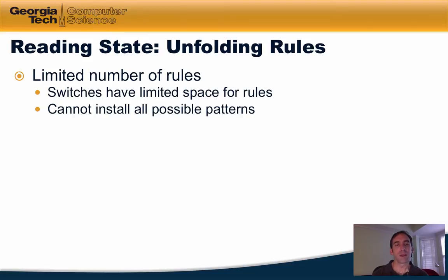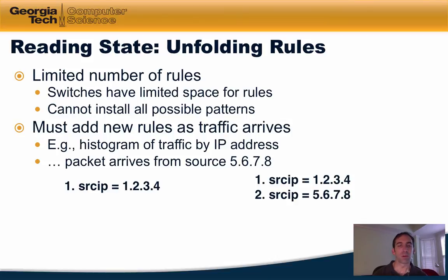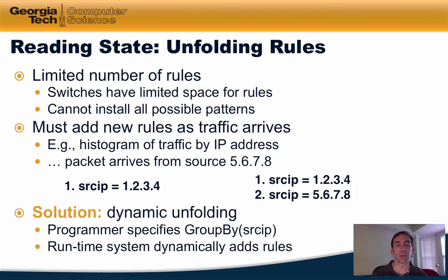Another challenge in reading network state is that there are a limited number of rules that can be installed in the switch. Switches have limited space for rules and we cannot install all possible patterns. For example, suppose we would like to monitor traffic in a way that allows us to produce a histogram of traffic volumes according to IP address. It clearly does not make sense to create a rule for every IP address. The solution is a primitive called dynamic unfolding, whereby the programmer can specify a group-by predicate and the runtime system will dynamically add rules to the switch as packets from distinct source IP addresses arrive.